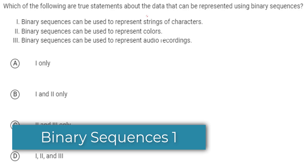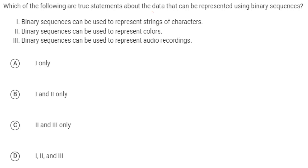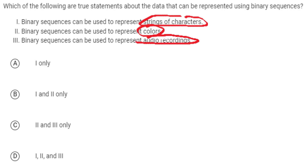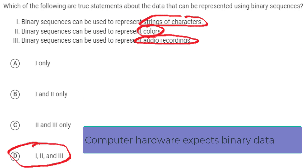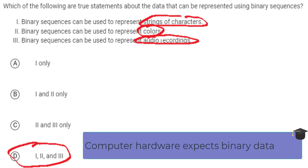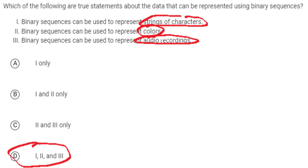This question asks what kind of data we can represent with binary sequences — strings of characters, colors, or audio recordings. The answer is pretty much always going to be all of the above, because the key is that computers can represent everything as binary sequences. That's how the hardware interprets data, using on and off states of electricity.